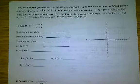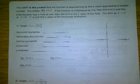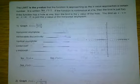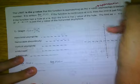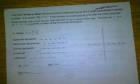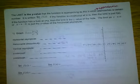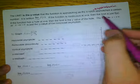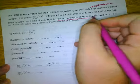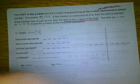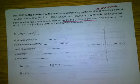The limit is the y-value of the function that is approaching. 'Approaching' is very important — it does not mean exact; it means approximation. If the function is continuous, the limit is the exact answer. If there is a hole, the limit is the y-value of the hole. If the limit is as x approaches infinity or negative infinity, it's just the y-value of the horizontal asymptote.